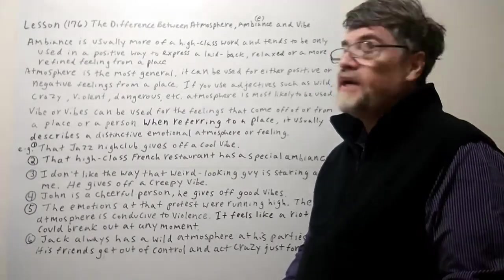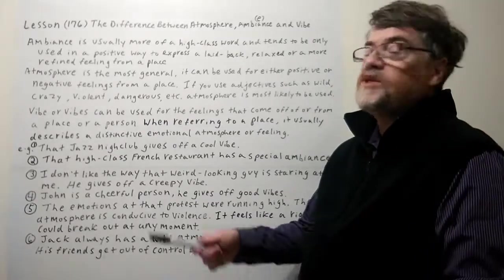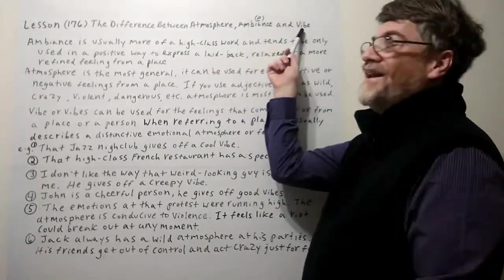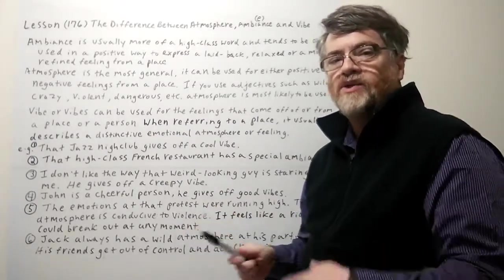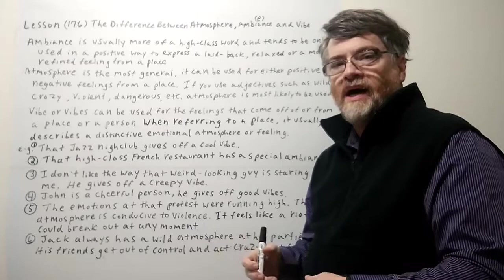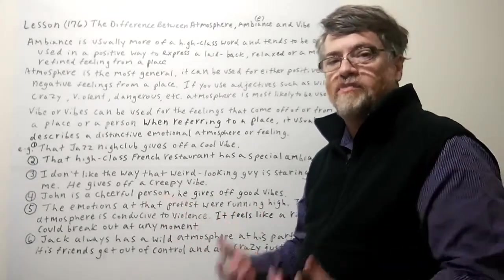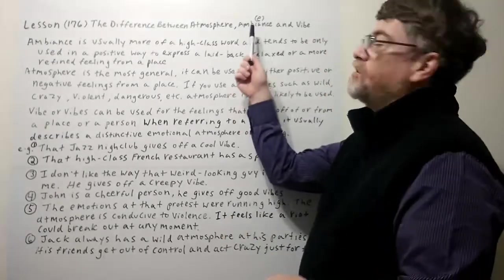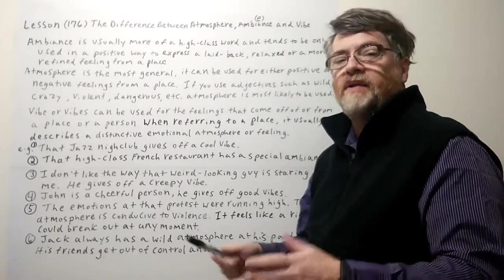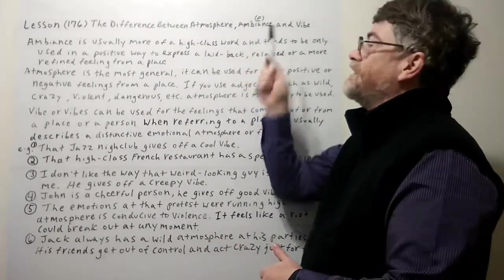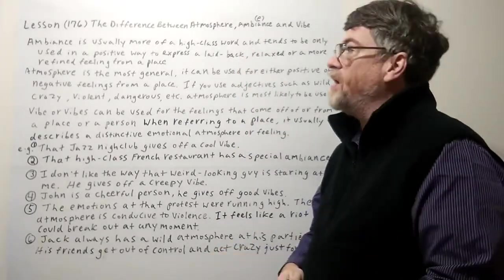Hi, this is Tutor Nick P and this is lesson 176. Today we're going to look at the difference between atmosphere, ambiance, and vibe. Students often ask about these three because all of them can describe giving off feelings from a place. Note that ambiance can be spelled two ways: a-m-b-i-a-n-c-e or a-m-b-i-e-n-c-e.